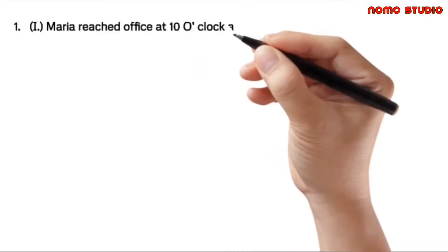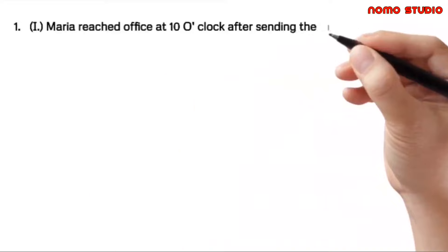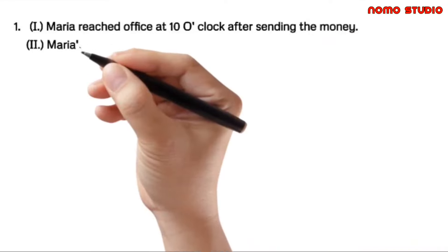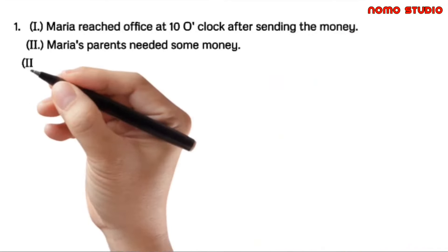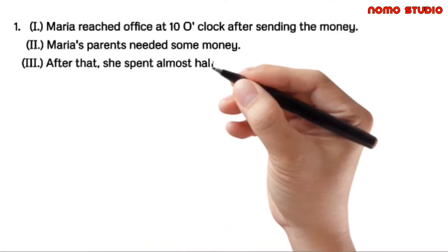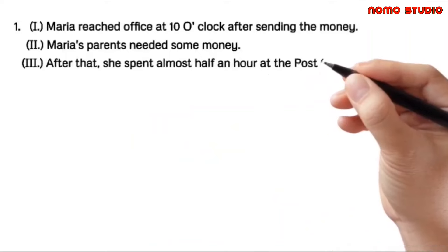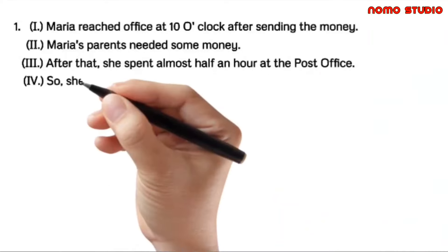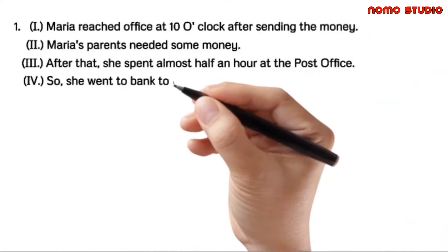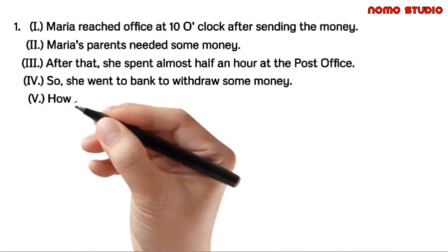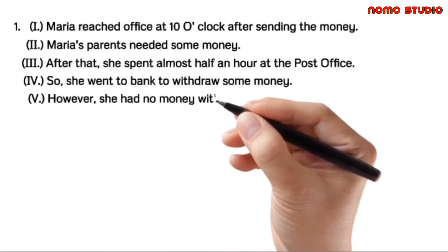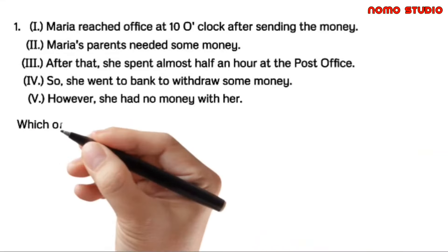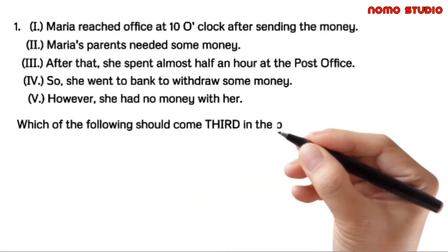Here is a sample problem. The five sentences are: (I) Maria reached the office at 10 o'clock after sending the money. (II) Maria's parents needed some money. (III) After that, she spent almost half an hour at the post office. (IV) So, she went to the bank to withdraw some money. (V) However, she had no money with her. Which of the following should come third in the paragraph?